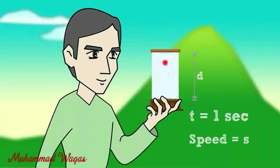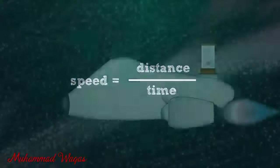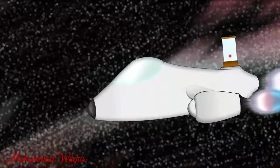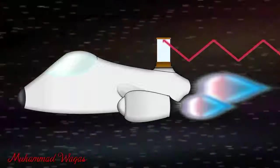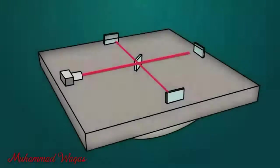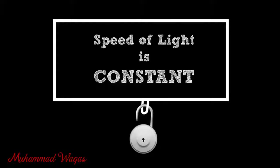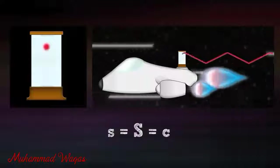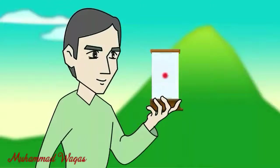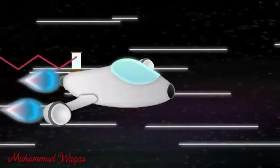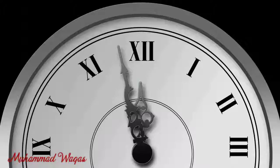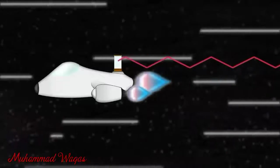Remember, speed is distance per unit time. Now consider another set of the same mirrors with a photon of light traveling in a spaceship. This set of mirrors also travels with the speed of the spaceship in the same direction. Here, light has to cover an extra distance D in the same time of one second, giving speed S = D per unit time. But the speed of light is proven to be constant — so the small s equals the capital S, that is C. For both the stationary set of mirrors and the set of mirrors in the spaceship, the speed of light is constant and the same wherever you are.